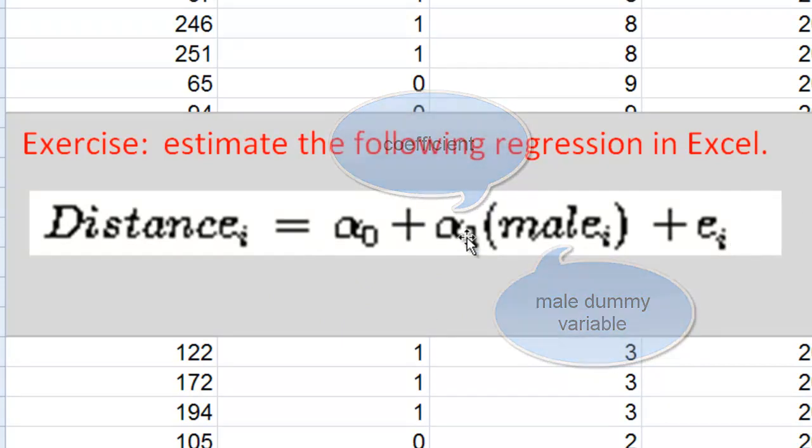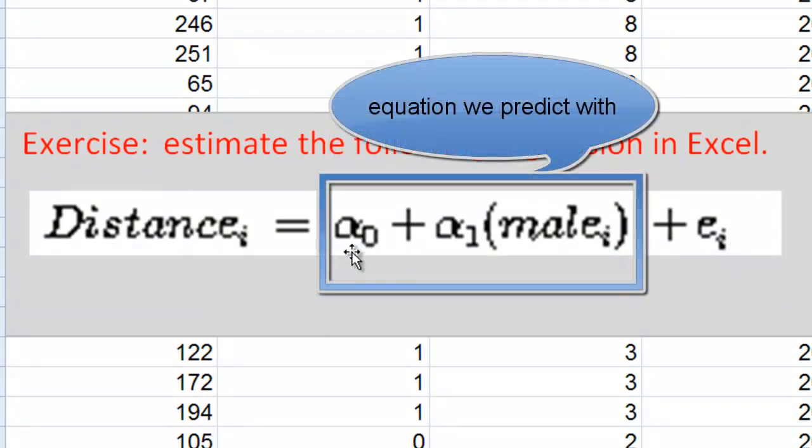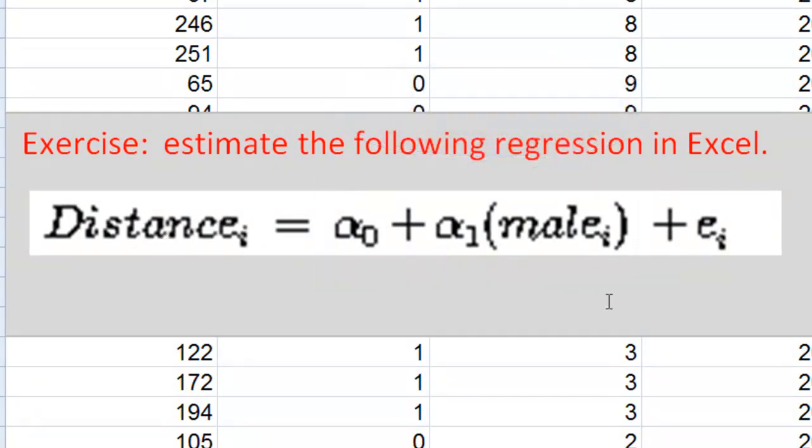Now this prediction error, we don't know what it is, and what we do is estimate a coefficient alpha zero and a coefficient alpha one to get really good predicted hitting distances such that the sum of these squared errors here would be minimized.